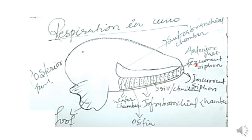At the tip of the anterior region there is the presence of the excurrent siphon and incurrent siphon. Through the incurrent siphon there is an entry of oxygenated water inside the body of Unio, so it is known as the incurrent siphon. Likewise, from the excurrent siphon there is a release of excretory products produced inside the body of Unio, so it is known as the excurrent siphon.